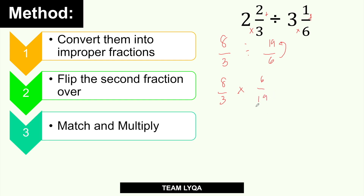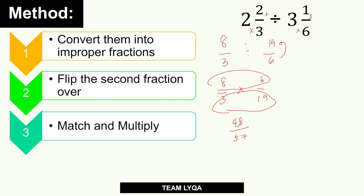Next, match and multiply. You have 8 times 6 which is 48, over 3 times 19 which is 57. Then convert to a mixed number or lowest terms if possible. In this case, both are divisible by 3 — I know that from the GCF video, so watch that if you haven't to speed this up. Divide by 3: 48 over 3 is 16, and 57 over 3 is 19. That gives you 16 over 19. Since they have no common factor, this is your final answer.